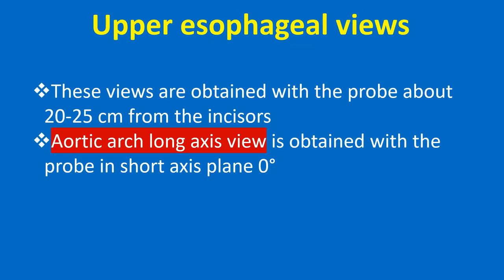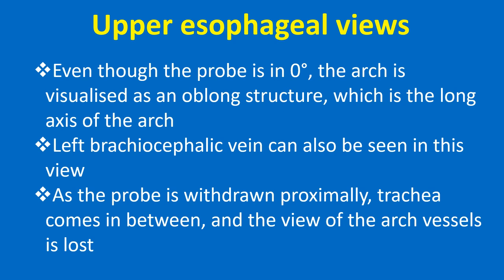Upper esophageal views are obtained with the probe about 20-25 cm from the incisors. The aortic arch long axis view is obtained with the probe in the short axis plane at 0 degrees. Even though the probe is at 0 degrees, the arch is visualized as an oblong structure, which is the long axis of the arch. The left brachiocephalic vein can also be seen in this view. As the probe is withdrawn proximally, the trachea comes in between and the view of the arch vessels is lost.